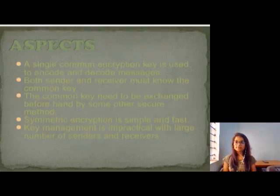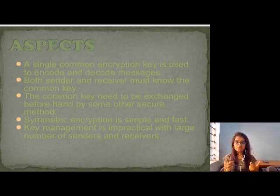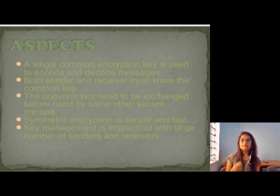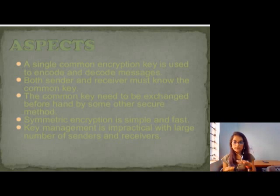Next is aspects of cryptology. The aspect is that when we send a message, the sender and receiver are the two common parties who need to know the key to unlock it. If the sender and receiver do not share the common key, then there will be a problem with the message. If we send the message using a common key, then we can open it, but managing the common key in a group becomes difficult.